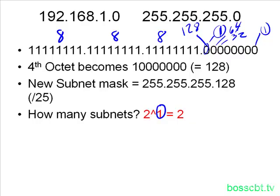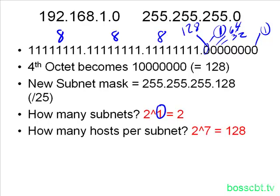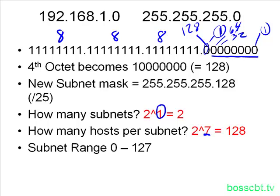How many hosts will there be in each of these two new subnets? The formula is 2 to the 7th, which equals 128. The 7 comes from the number of host bits left over in the fourth octet that we did not touch. We started with 8 bits in the octet, took 1 away for the subnet, and we're left with 7. So 2 to the power of 7 equals 128, meaning 128 hosts can fit in each of the two subnets.